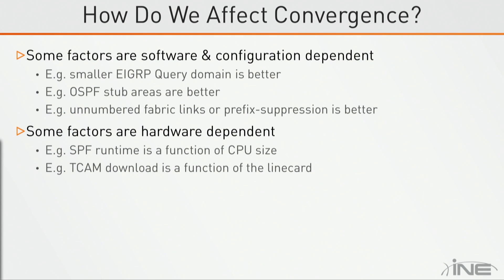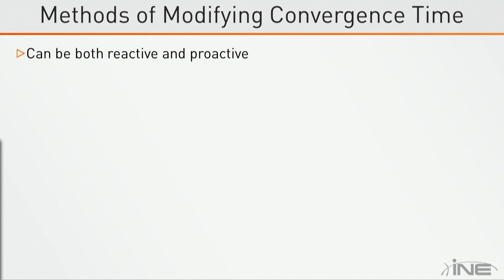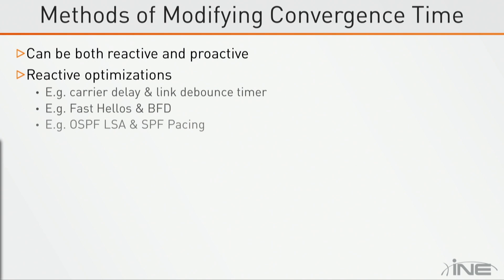Some of these factors are going to be outside of our control, like how long does it take to actually write the changes to the line card. This is going to depend on the generation of the card and the specific ASICs being used. But there are some ways that we can engineer around this. Reactively, this would be: when there is a failure, how do I react to it?